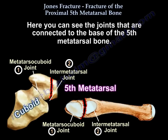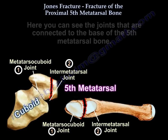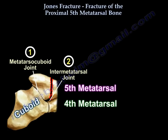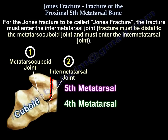Here you can see the joints that are connected to the base of the 5th metatarsal bone. One joint articulates with the cuboid bone and is called the metatarsal cuboid joint, and the other articulates with the 4th metatarsal and is called the inter-metatarsal joint. For Jones Fracture to be called Jones Fracture, the fracture must be distal to the metatarsal cuboid joint and must enter the inter-metatarsal joint.